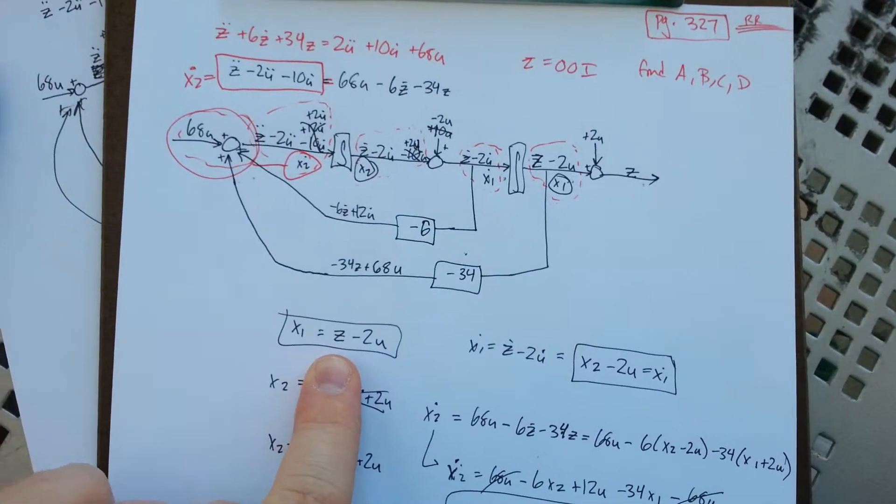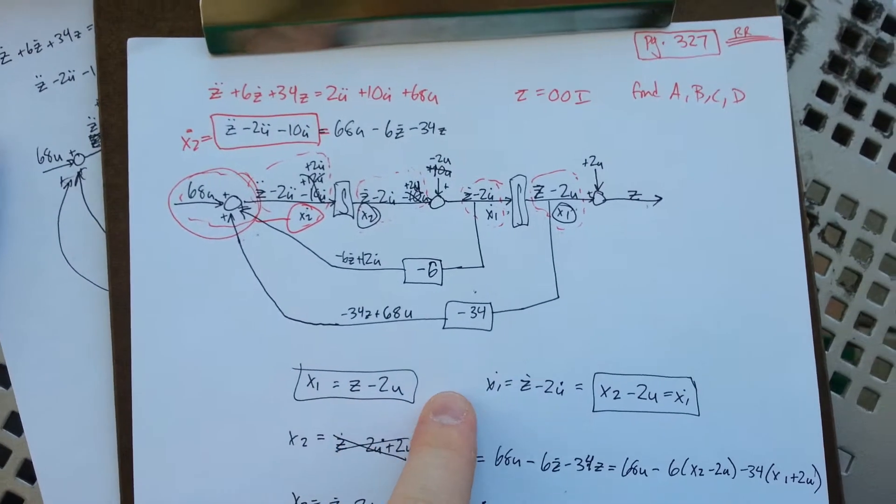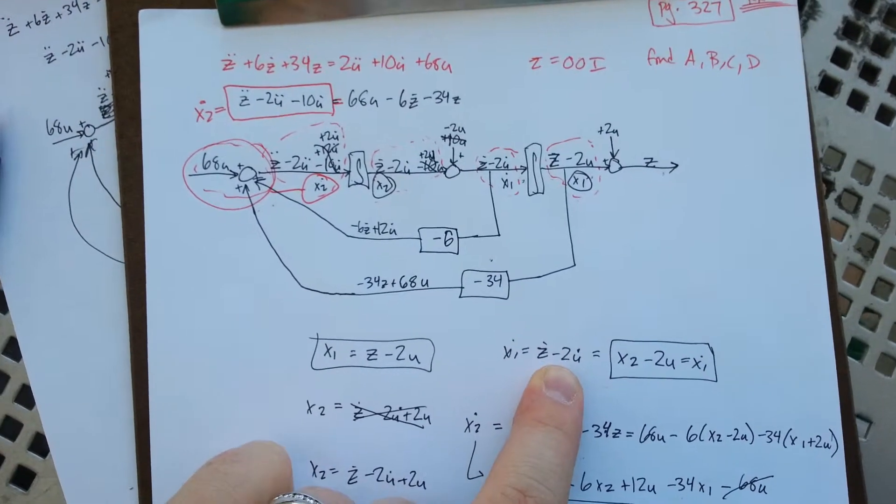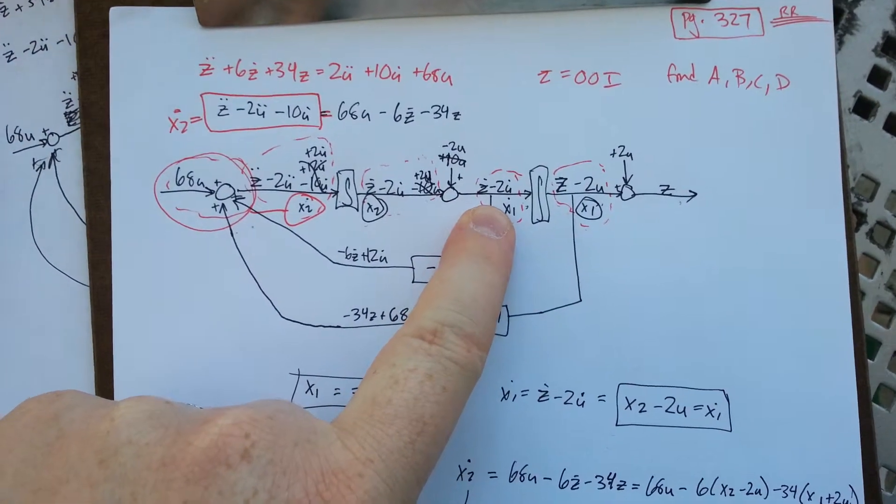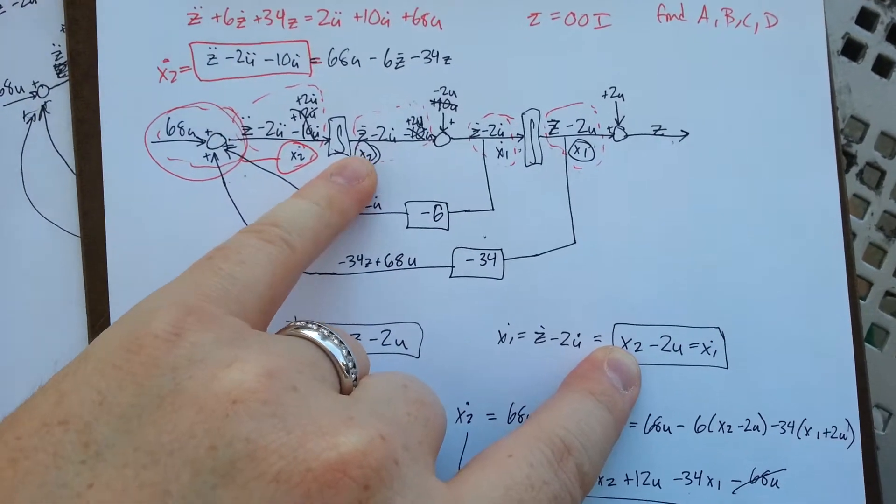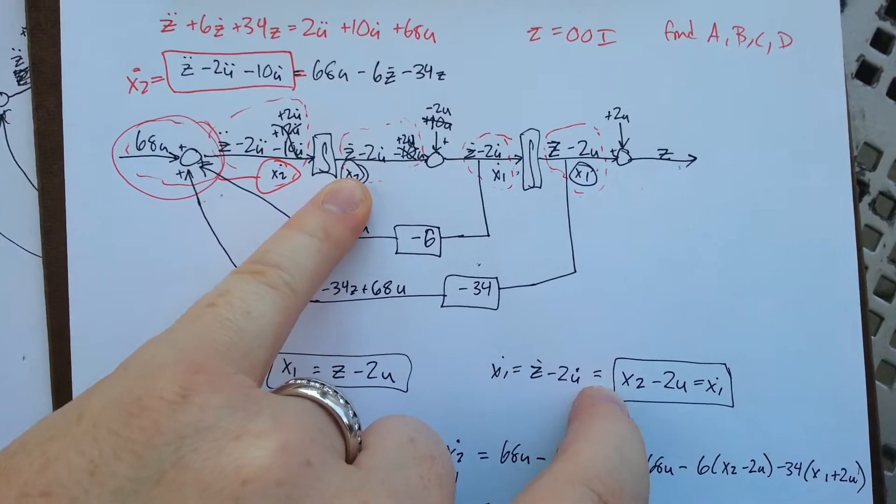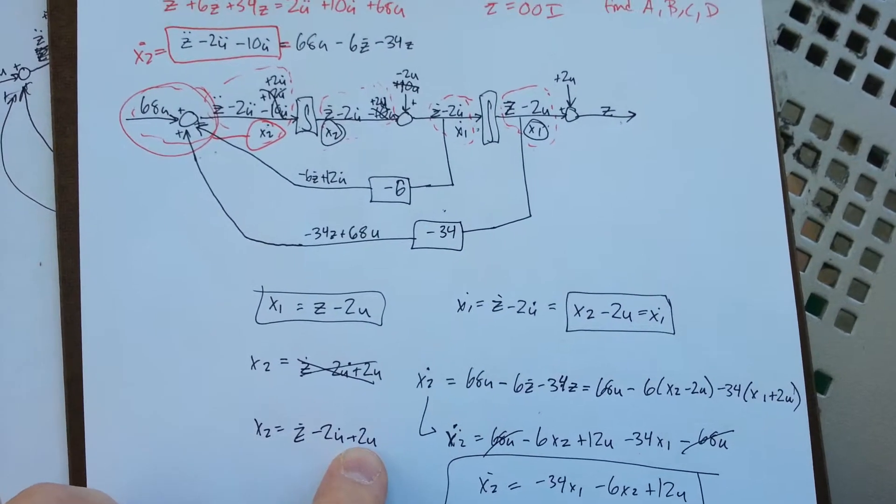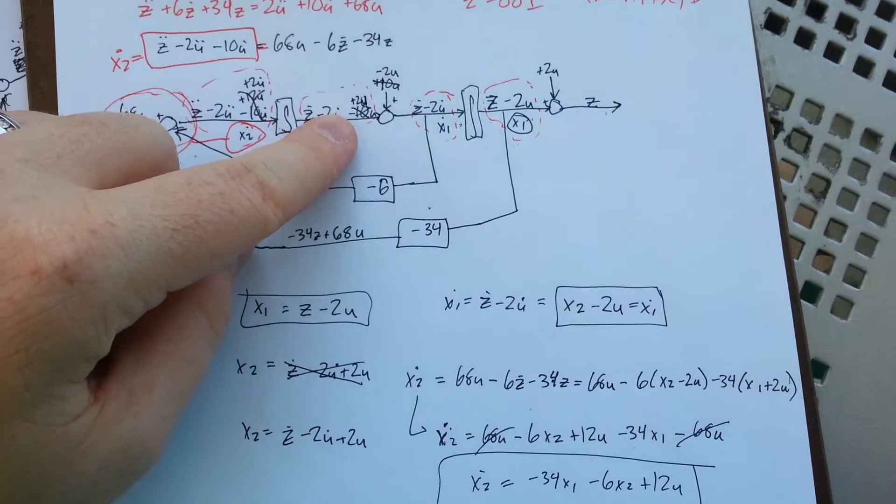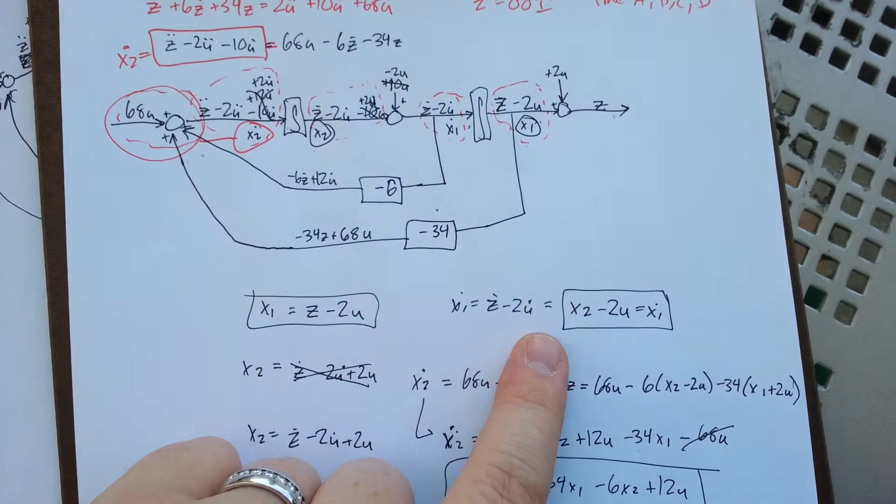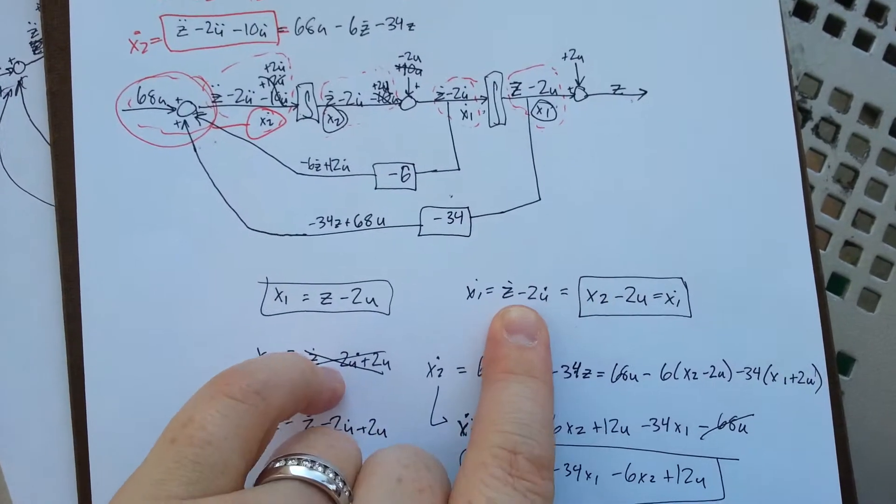Looking at it here, I've got z minus 2u. The derivative of that is x1 dot equals z dot minus 2u. There's my z dot minus 2u dot, which I can say is, since x2 is z dot minus 2u dot plus 2u accounting for the cancellation there from the bootstrapping, I can say that it's x2 minus 2u will give me that.